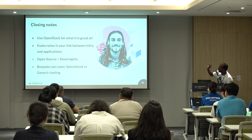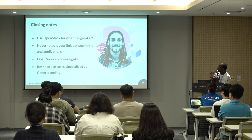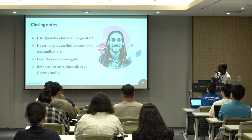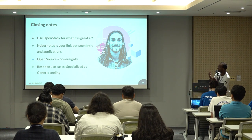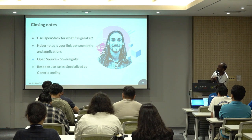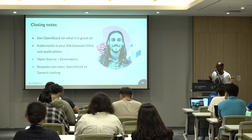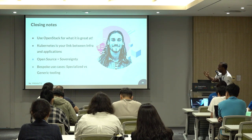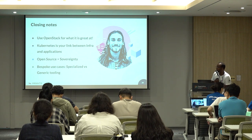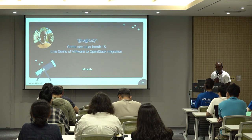As a summary: yes, OpenStack is great, but it's great at what it's made for — use it for IaaS purposes, select the right features and components, and integrate it properly. Kubernetes is the layer you'll use to link between infrastructure and applications — very key. Open source for sovereignty reasons. And when you look at bespoke use cases, you always have the question of generic tools versus specialized tools. I showed you specialized tools like Lagoon and Kubeflow — for some of these bespoke use cases, specialized tools are one of the best options. Thank you very much.